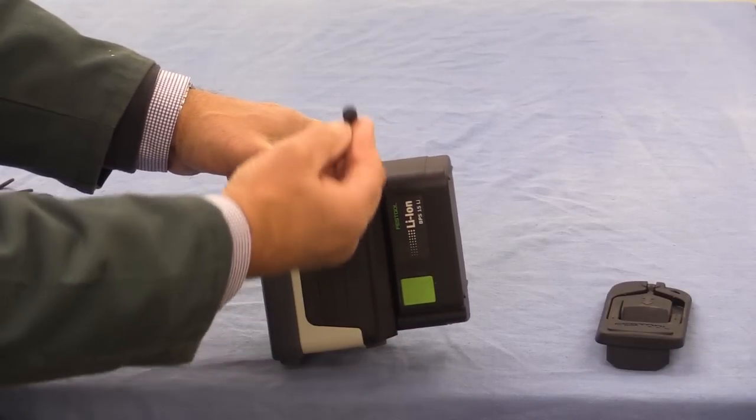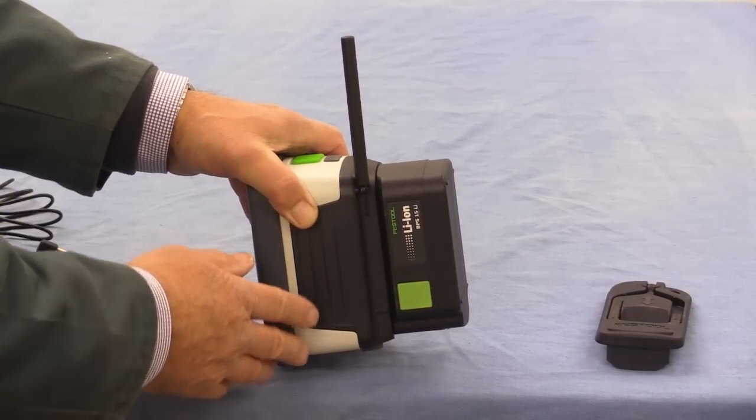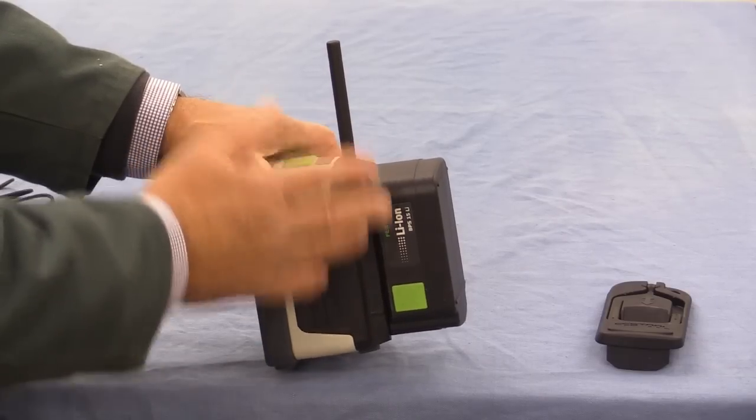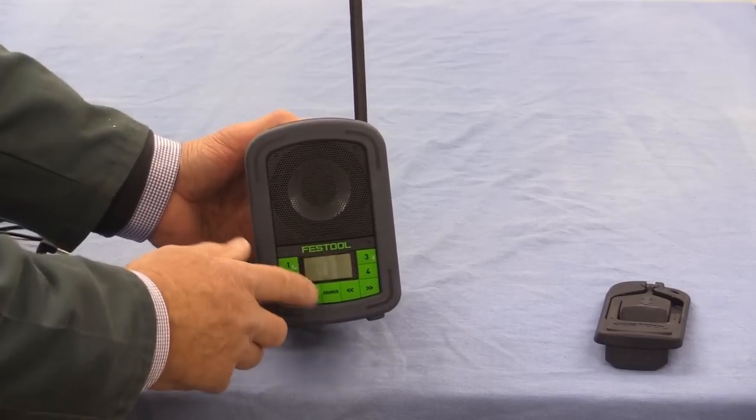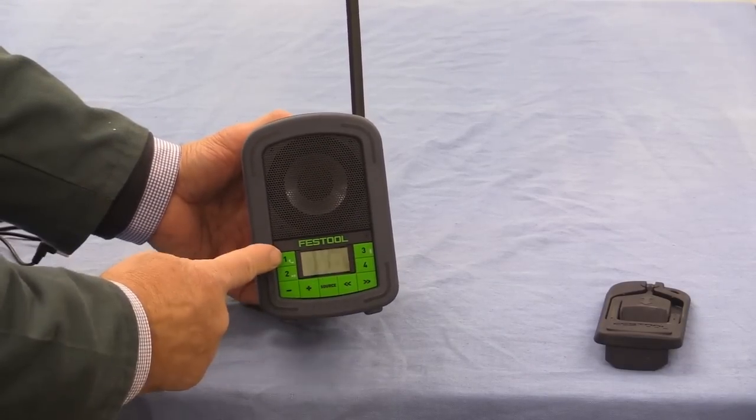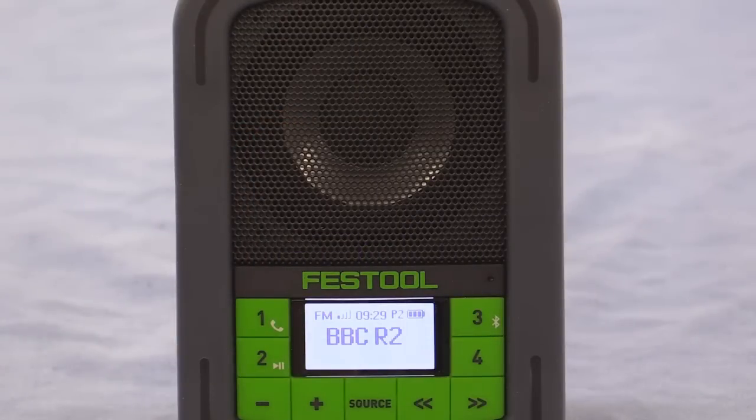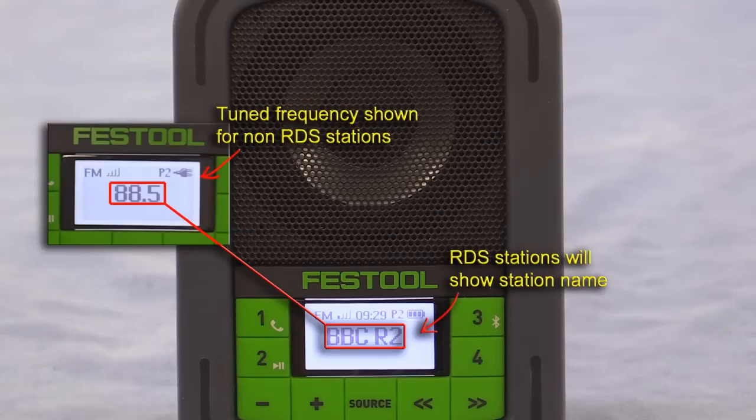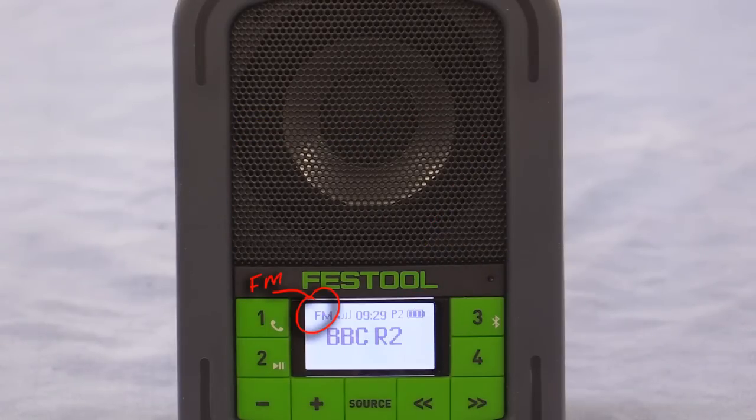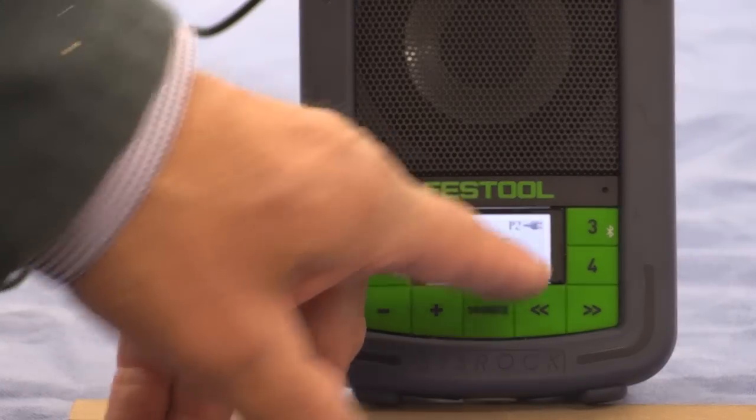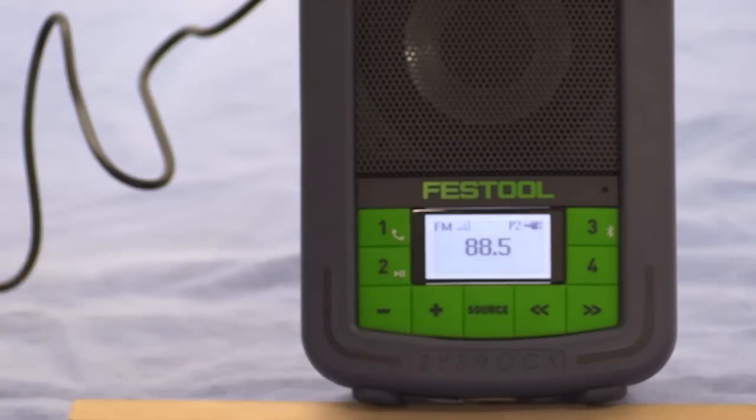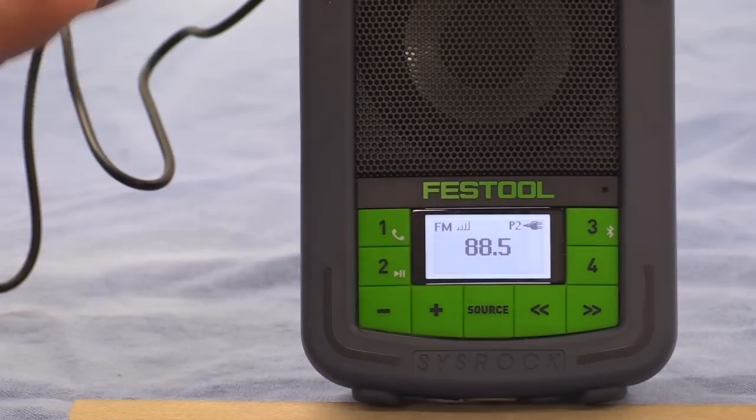On the side here is an antenna and depending on the strength of FM signals in your area you may have to have that up all the time. At the front here we've got a display and then around the display are a series of buttons. Now the display will indicate the frequency and if the radio station has an ID name it may show that as well. It tells you that you're running FM and it shows the signal strength next to that FM sign. I've just plugged in the main supply and you can now see rather than having the battery bar indicator there's a mains symbol so the radio knows it's running off the mains.